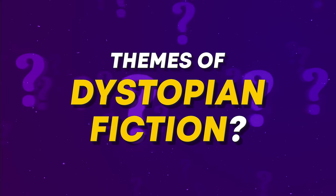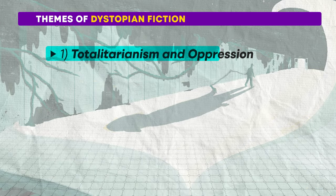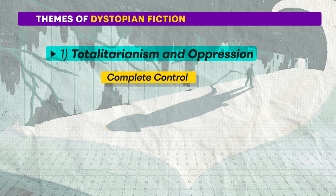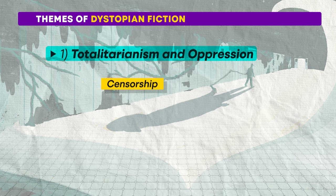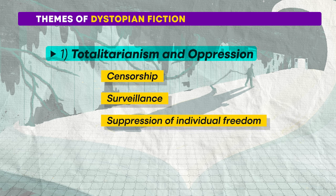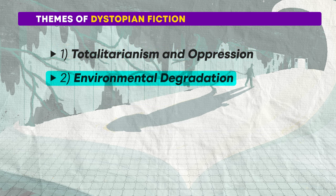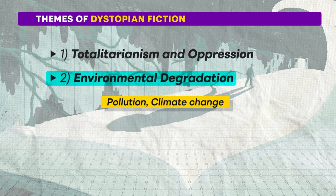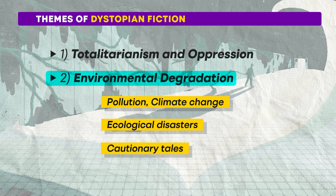Let's discuss the themes of dystopian fiction. The first is totalitarianism and oppression. Dystopian societies are often characterized by oppressive governments or ruling bodies that exert complete control over the people. In any dystopian fiction, you would observe the recurring themes of censorship, surveillance, and the suppression of individual freedom. The second theme is environmental degradation — some dystopian fictions focus on consequences of environmental destruction, portraying worlds ravaged by pollution, climate change, or other ecological disasters. These narratives serve as cautionary tales about the impact of human activity on the planet and the urgent need for environmental awareness.